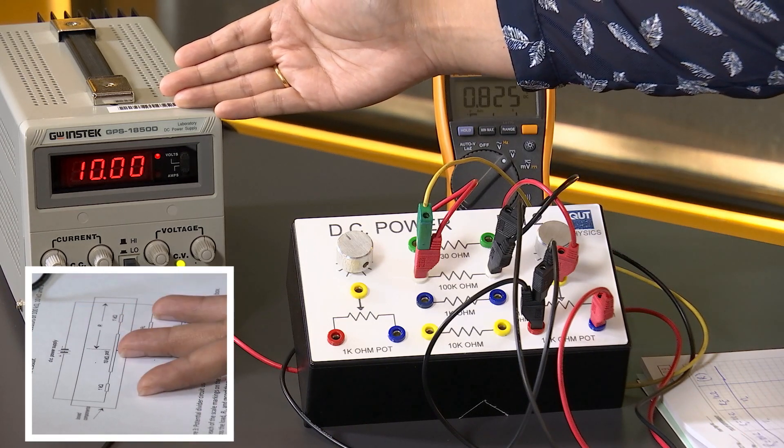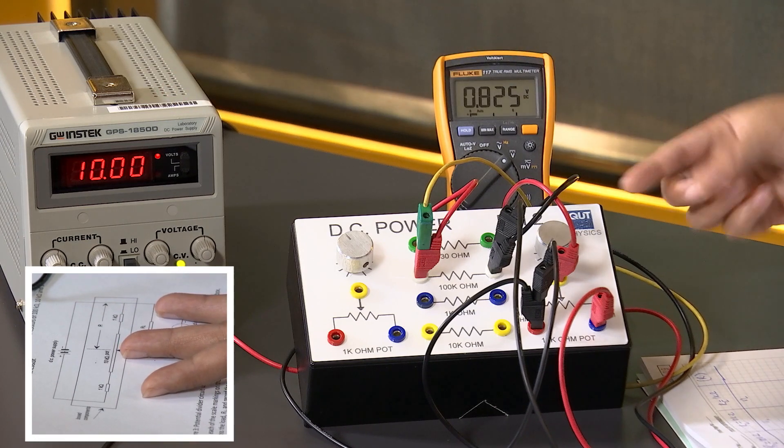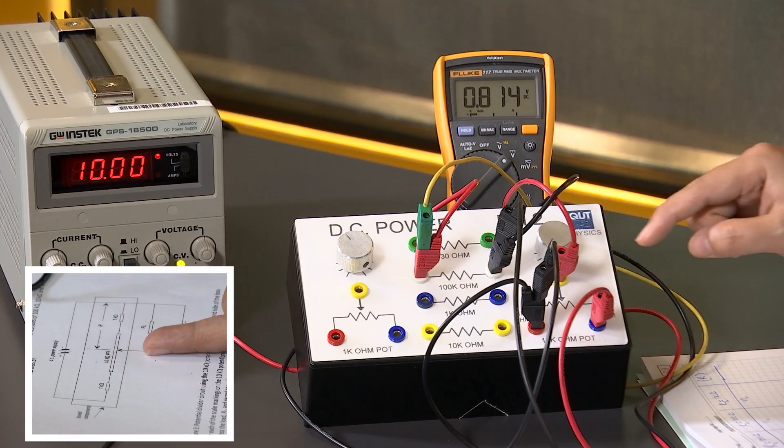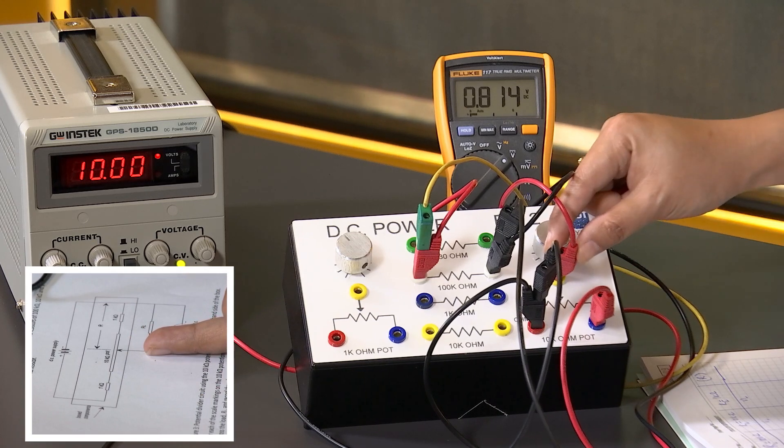And then we have three values of resistances: 1, 2, and 3 here. The middle one is a variable resistor, which is this one.